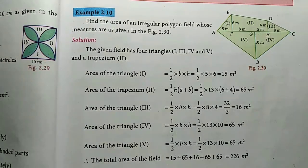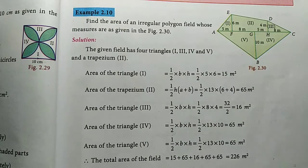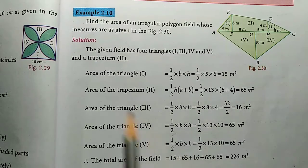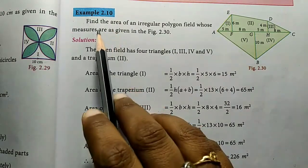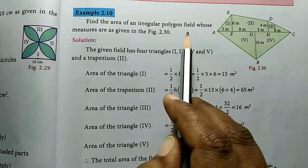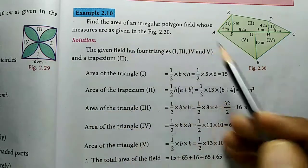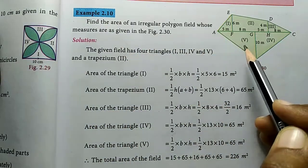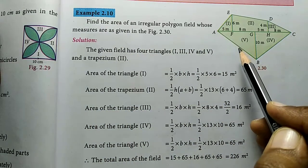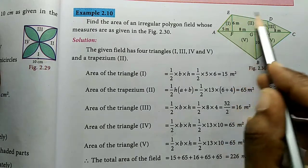Hello friends, welcome to VM Nutrition Channel. In our channel, 8th Standard Max Full Book Edition Chapter 2, Example 2.10: Find the area of an irregular polygon field whose measures are as given in the figure. Here you have a diagram — it's an irregular polygon field with given measurements.